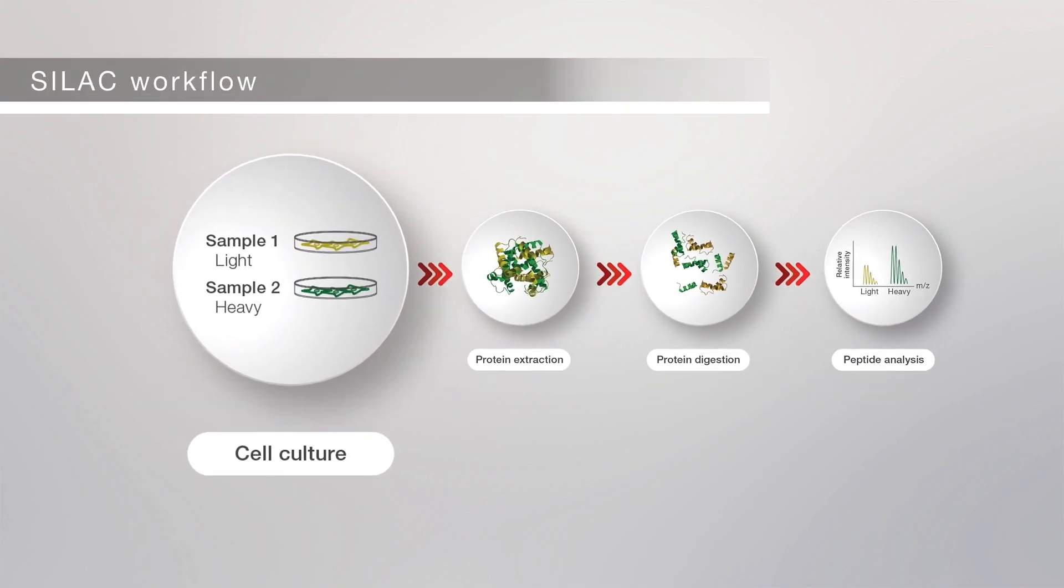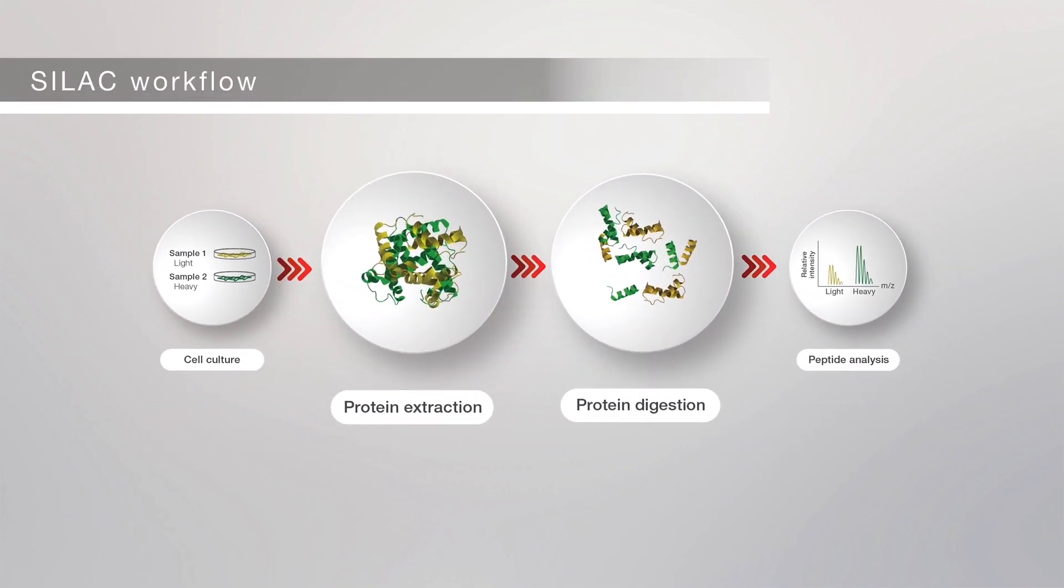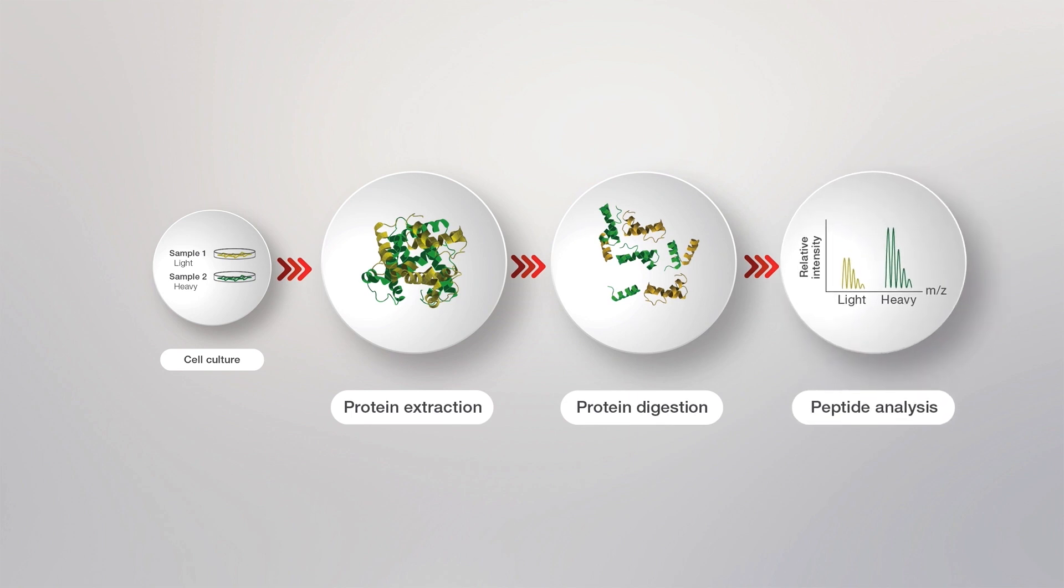After cell lysis, equal amounts of protein from both cell populations are combined, enzymatically digested, and analyzed using mass spectrometry.